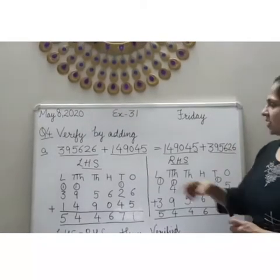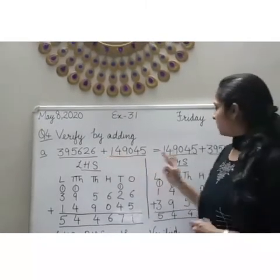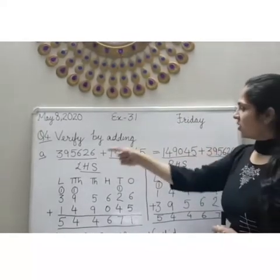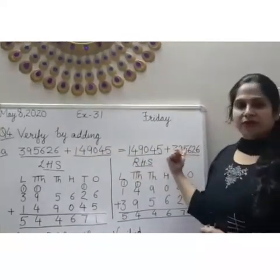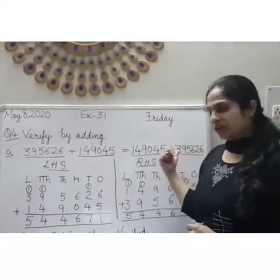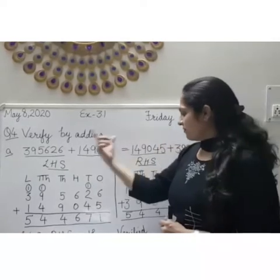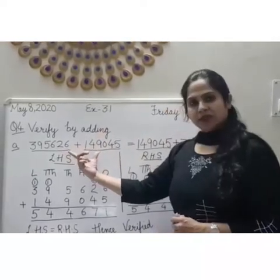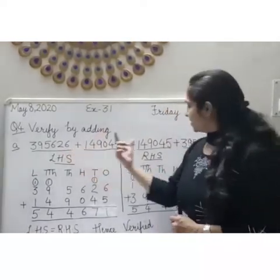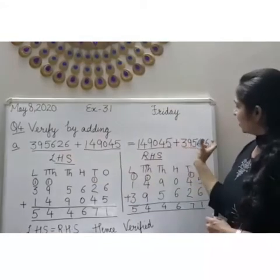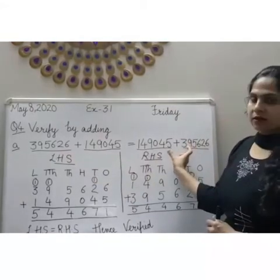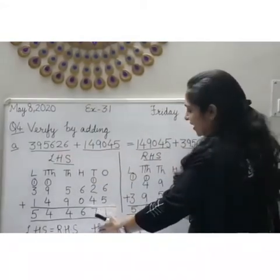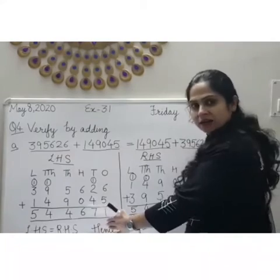Now see here the numbers are interchanged. This is the order property of addition. In order property of addition, when we add two numbers and we change their order, then the sum of both the sides are equal.